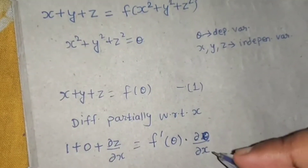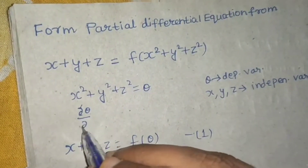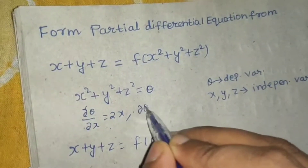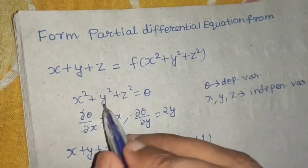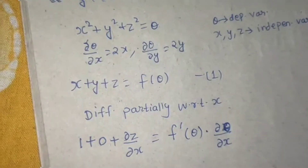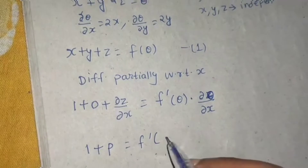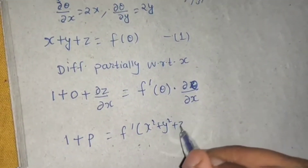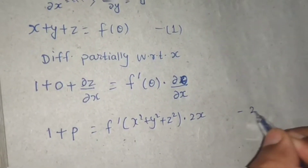Let's find del theta by del x and del theta by del y. Since theta equals x squared plus y squared plus z squared, del theta by del x equals 2x, and del theta by del y equals 2y — treating the other variables as constant respectively. We don't need del theta by del z since we won't differentiate with respect to z. So equation two becomes: 1 plus p equals f dash of (x squared plus y squared plus z squared) times 2x.